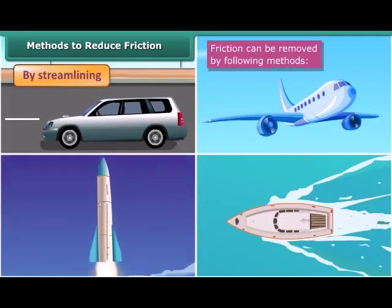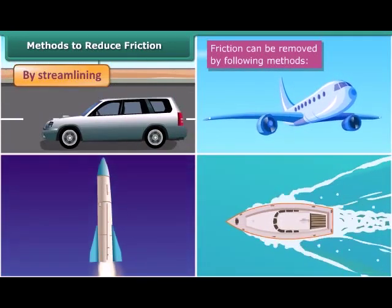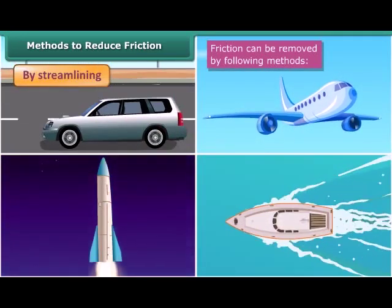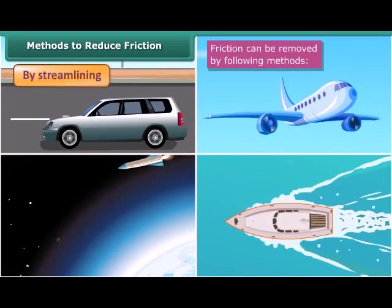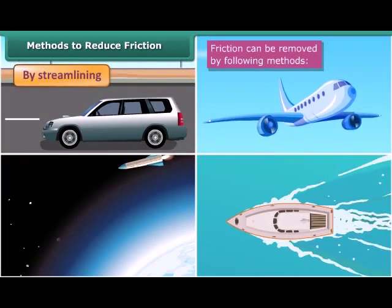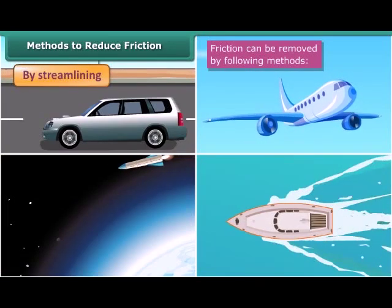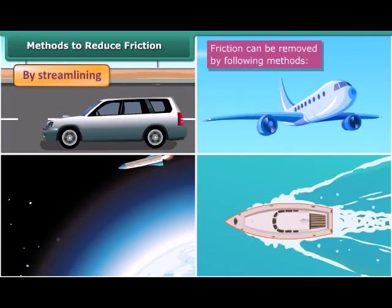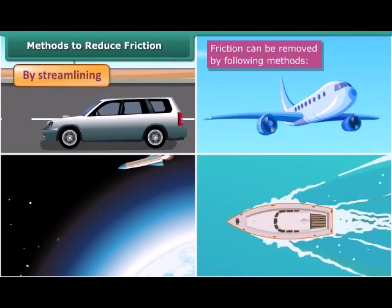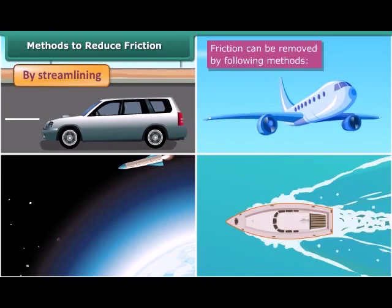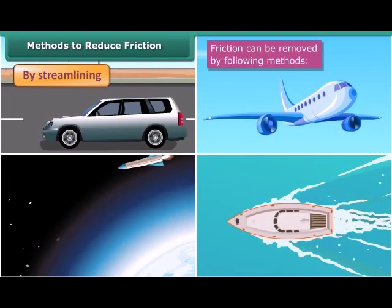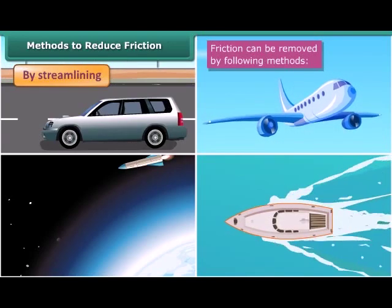By streamlining: the bodies of cars, aeroplanes, and rockets are streamlined to reduce air friction. The bodies of boats and ships are also streamlined to reduce the friction of water.